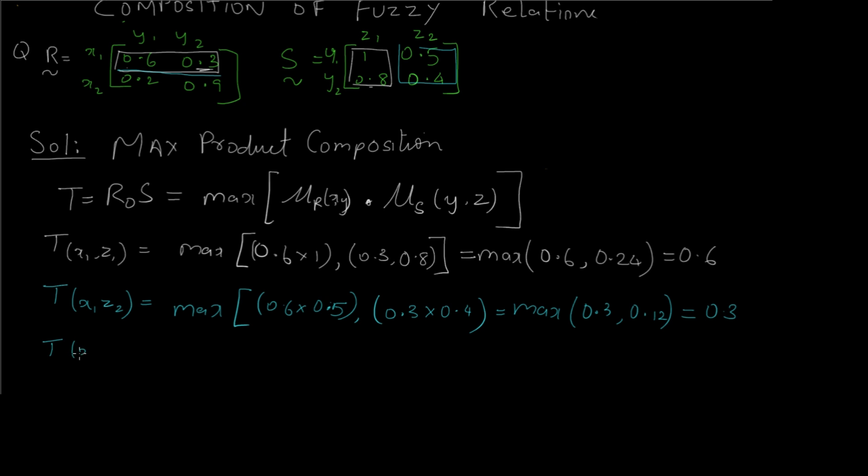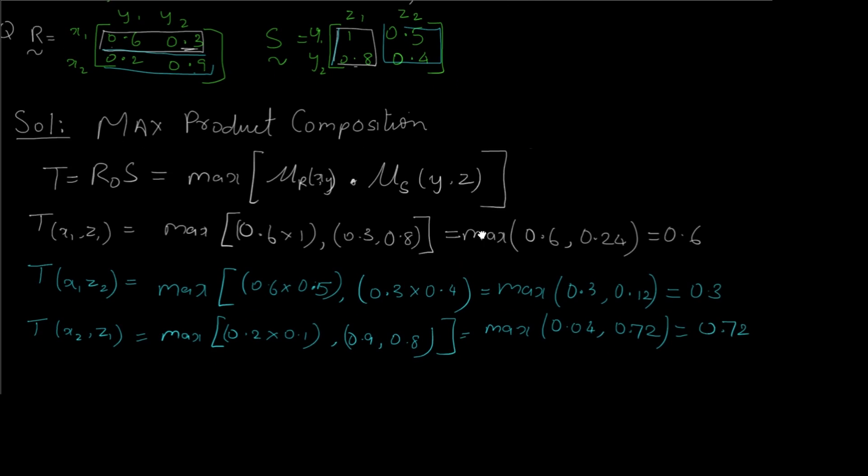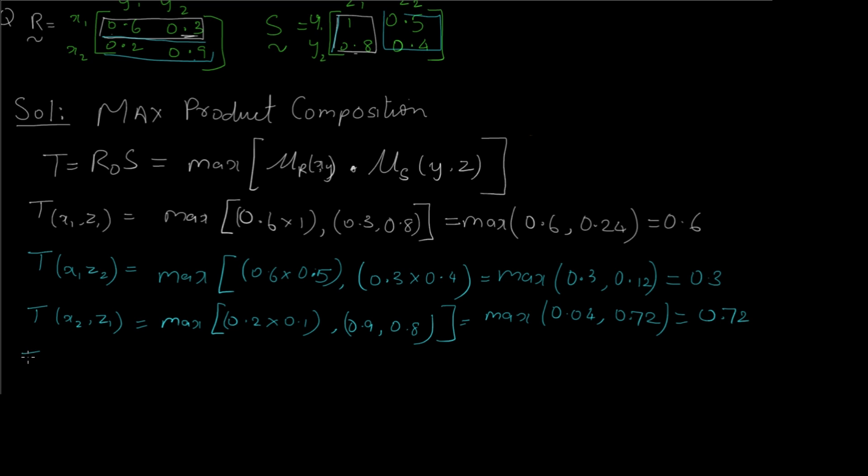Now for the third term, x2 comma z1, we have to take the second row of the first relation and first column of the second relation. It will give us max of 0.2 into 0.1 and 0.9 into 0.8, which gives us max of 0.04 comma 0.72. The maximum out of these two is 0.72.